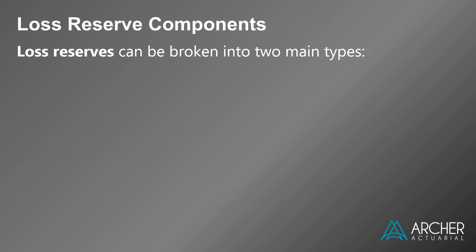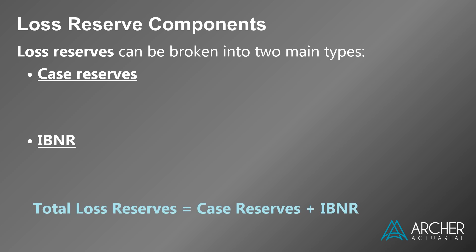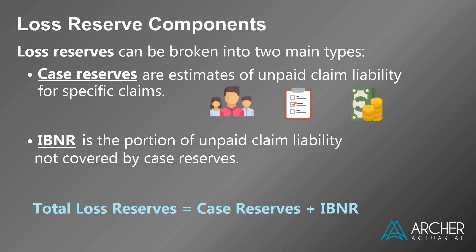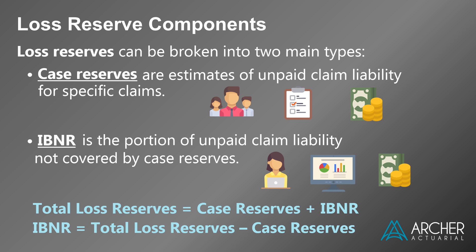Loss reserves can be broken into two main types: case reserves and IBNR. A company's total reserves equals the sum of its case reserves and IBNR. Case reserves are estimates of unpaid claim liability for specific claims. Case reserves are established by claims adjusters who review the details of each individual claim to estimate future payments. IBNR is the portion of unpaid claim liability not covered by case reserves. Equivalently, IBNR equals total loss reserves minus case reserves.